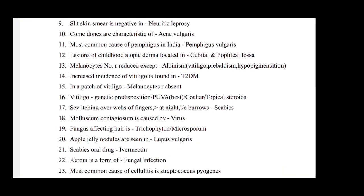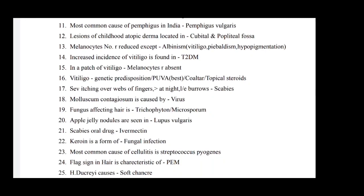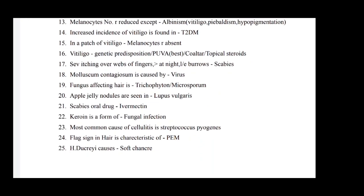Comedones are characteristic of acne vulgaris. Most common cause of pemphigus in India is pemphigus vulgaris. Lesion of childhood atopic dermatitis is located in cubital and popliteal fossa. Melanocyte number is reduced except in albinism, vitiligo, piebaldism, and hypopigmentation. Increased incidence of vitiligo is found in type 2 diabetes mellitus. In a patch of vitiligo, melanocytes are absent.